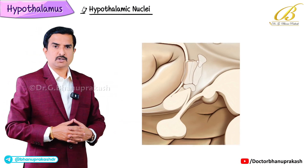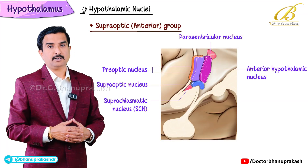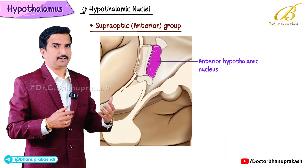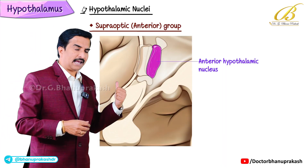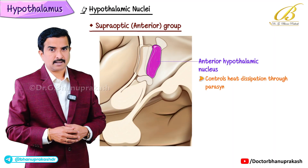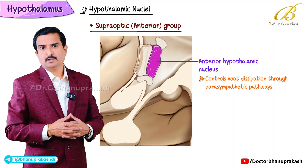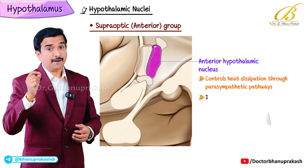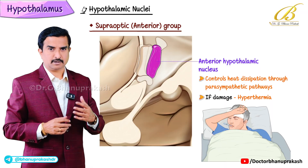The first is the supra-optic group, also called the anterior group. In this group, the first nucleus is the anterior hypothalamic nucleus, which controls heat dissipation through parasympathetic pathways. If damaged, it can cause hyperthermia.